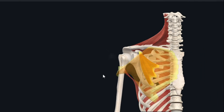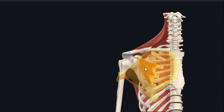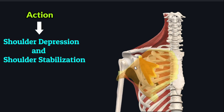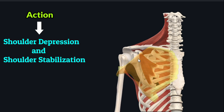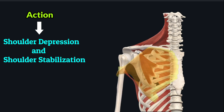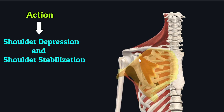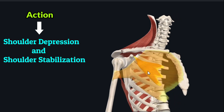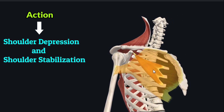The pectoralis minor muscle produces shoulder depression by acting on the coracoid process of the scapula. As this muscle contracts, it draws the scapula downward, producing shoulder depression, and in this way the pectoralis minor stabilizes the shoulder girdle.